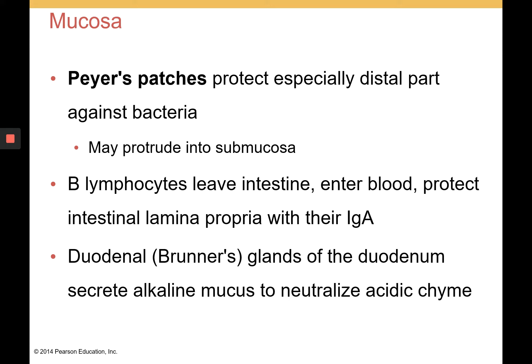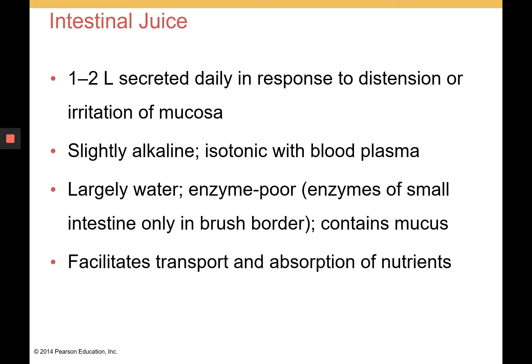There are also duodenal or Brunner's glands in the duodenum, which secrete an alkaline mucus to neutralize the acidic chyme dumped from the stomach into the first part of the small intestine. Intestinal juice is secreted daily — about one to two liters — in response to stretch or irritation of the mucosa. It is slightly alkaline to neutralize acidic chyme and is largely water-rich mucus. It is enzyme-poor; the enzymes are bound to the brush border rather than mixed into the intestinal juice. So intestinal juice primarily functions to neutralize acidic chyme and facilitate transport and absorption of nutrients.